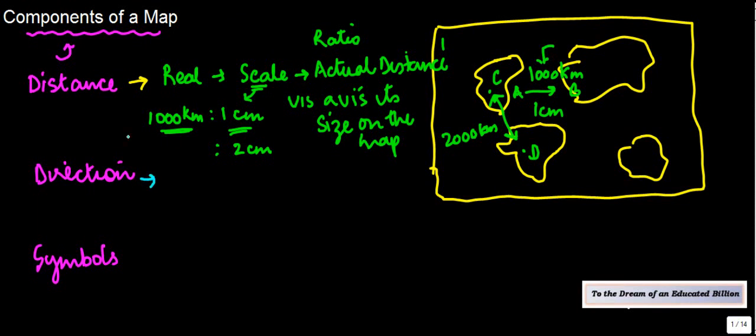Okay, so this was one of the things. The second thing is direction. Normally, if you will see a map, on the right-hand side, somewhere on the top over here, you would have something which is written as north. This arrow which is there is known as the north line. It represents the north direction.